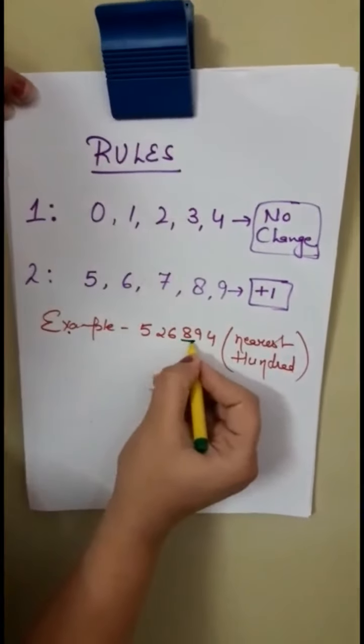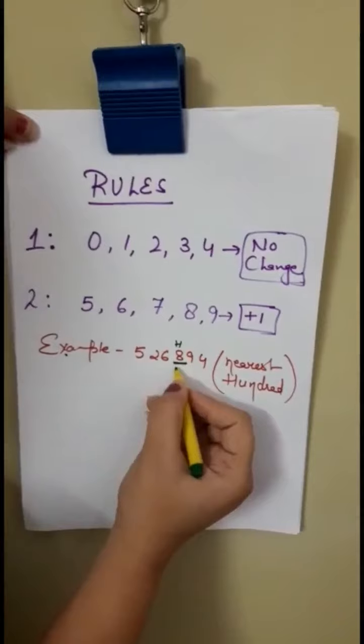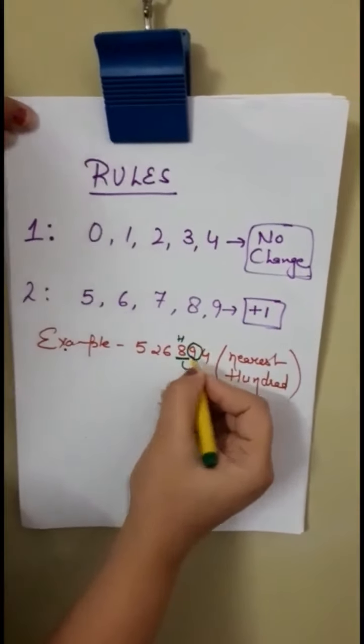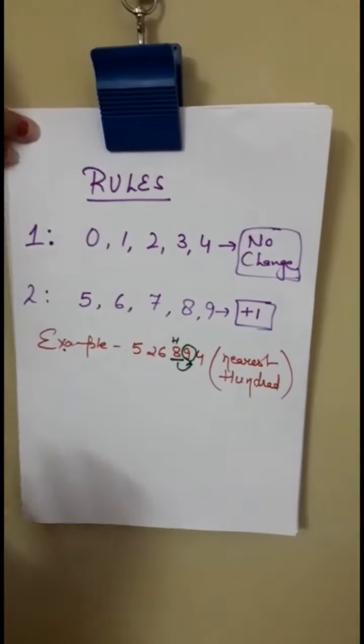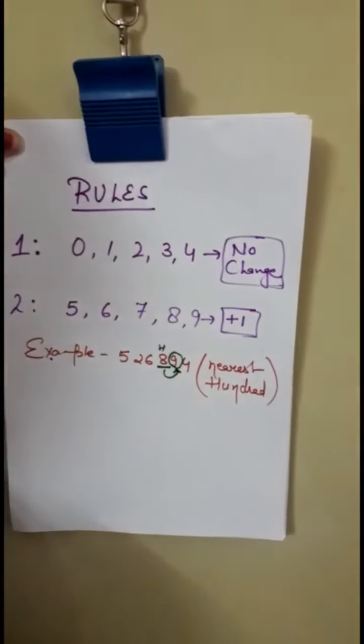1's, 10's and 100's. To isko underline kardo. Ye hundreds ki place hai. Isko underline kiya. Aap iske right side ka neighboring number kya hai? 9. To aap 9 ko kardo circle. Because neighboring number jab tak hum find out nahi karenghe, hum exact round off number ko nahi karpaayenghe. To 9 is your neighboring number. Aap 9 ka aa raha hai rule 2 mein.